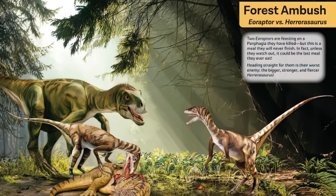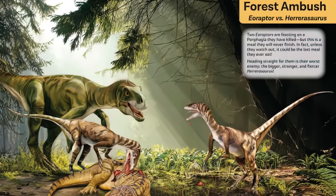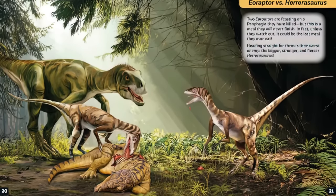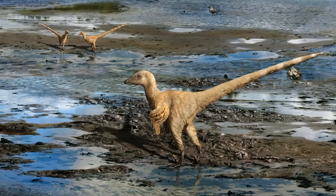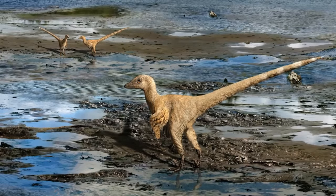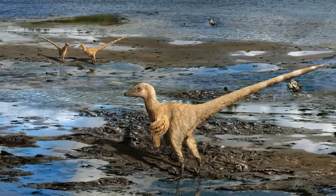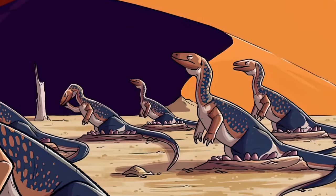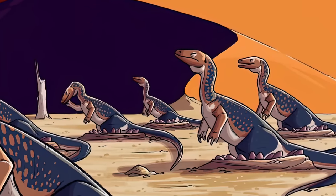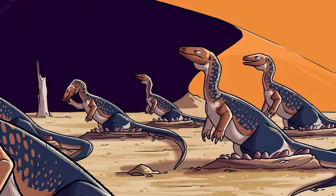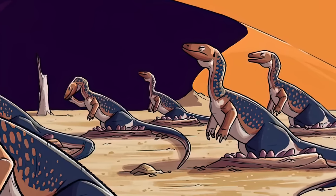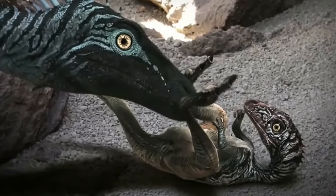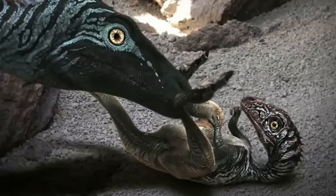Eoraptor may have displayed limited social behaviors, potentially forming small groups or herds. These dinosaurs formed groups for hunting purposes, likely to take down larger prey. Fossil evidence of nesting sites and parental care behaviors is more commonly found in later dinosaur species, but it is plausible that Eoraptor exhibited some form of parental care.